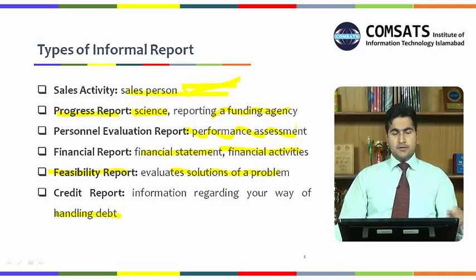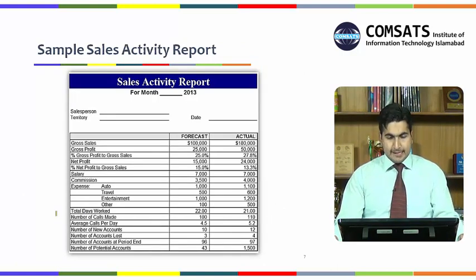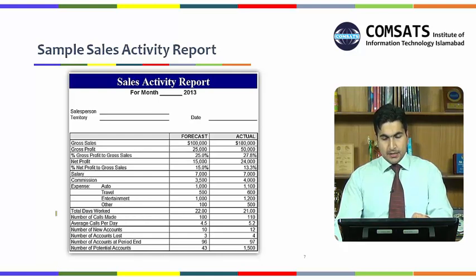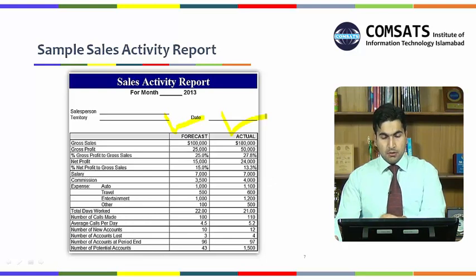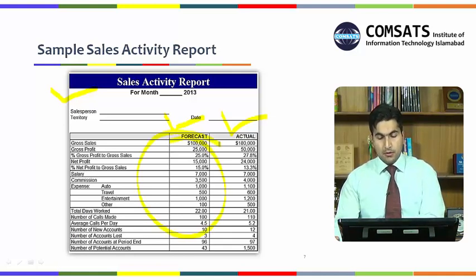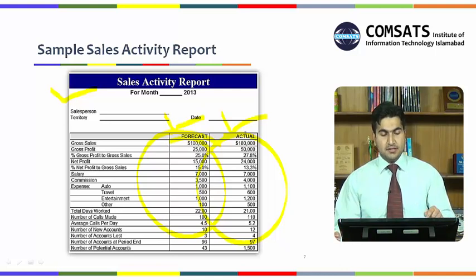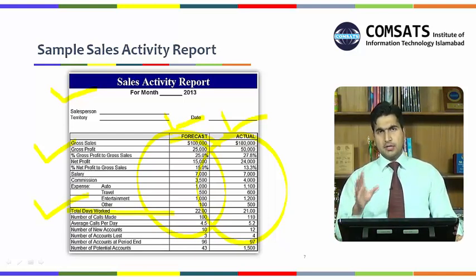Looking at the example of a sales activity report, you can clearly see the expectation versus actual amounts alongside dates. Focus on the expected amount and actual amount — sometimes there is more, sometimes less. It provides a complete detail of anticipated and actual sales activity: gross sales, profit, total days worked — all there in one good example of how a sales activity report is prepared and documented.